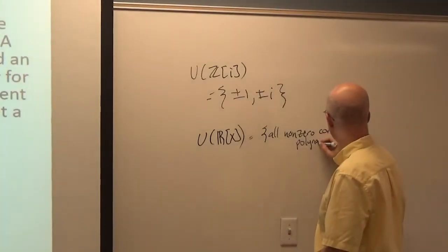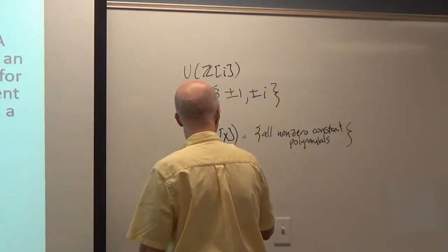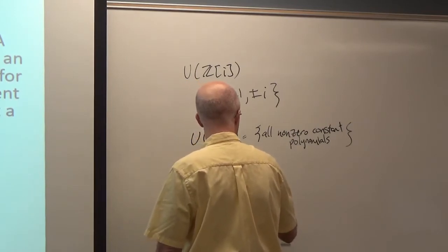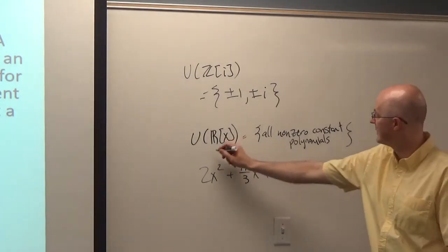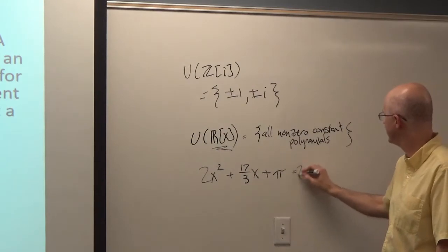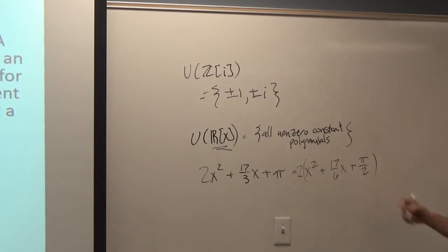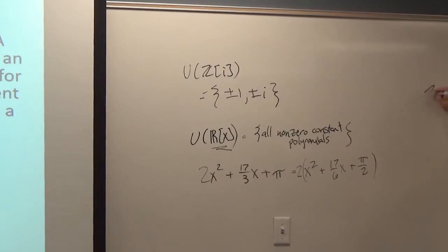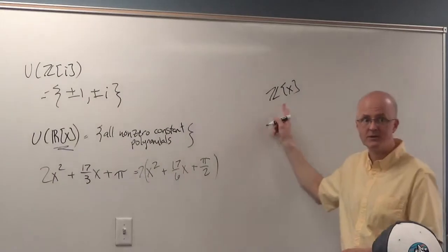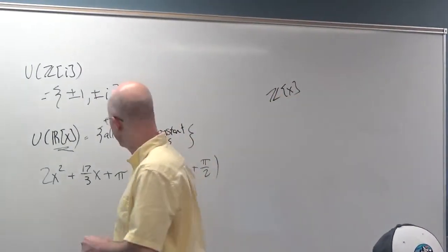Any time you've got two real polynomials such that one is a constant times the other, they are associates. For example, 2x² + (17/3)x + π is associated to x² + (17/6)x + π/2, because 2 times that second polynomial gives the first. As long as you're considering these coefficients to be in R, then 2 is a unit. If they were in Z[x], you would not consider 2 to be a unit — only plus or minus 1 would be units there.